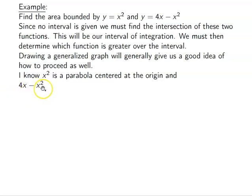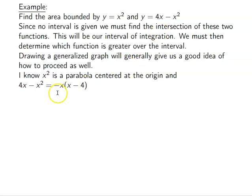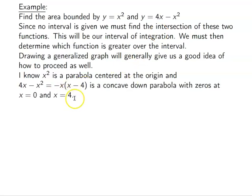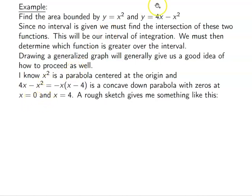The second function is shifted because it has the 4x term. Factoring out a negative x gives −x(x − 4), so the zeros of this quadratic are x = 0 and x = 4. My first function is centered at the origin with only one zero at the origin. So they have a shared zero at x = 0.